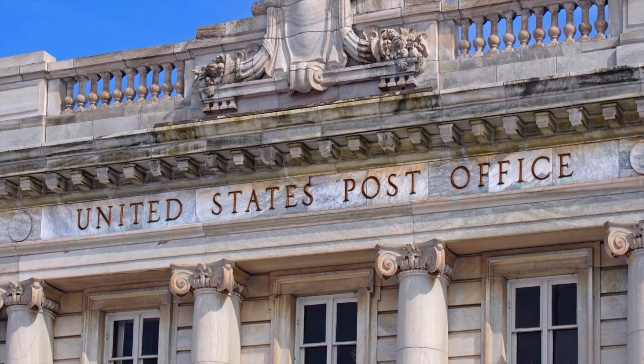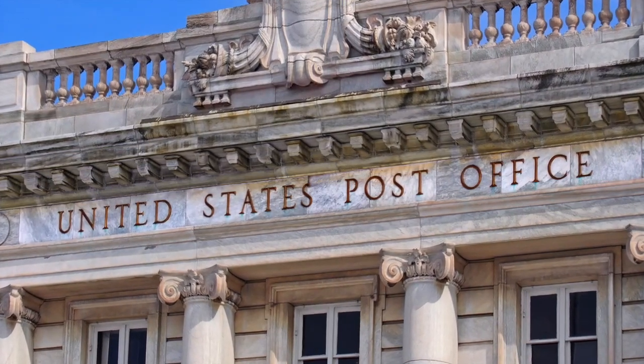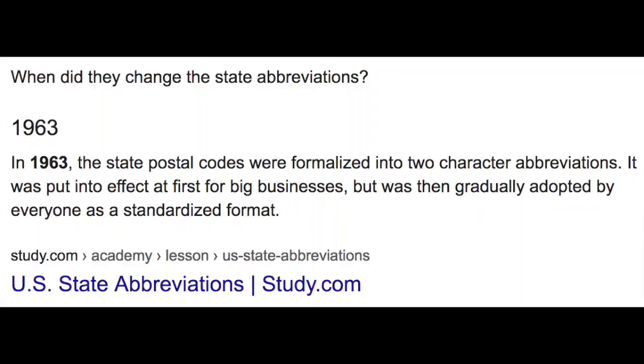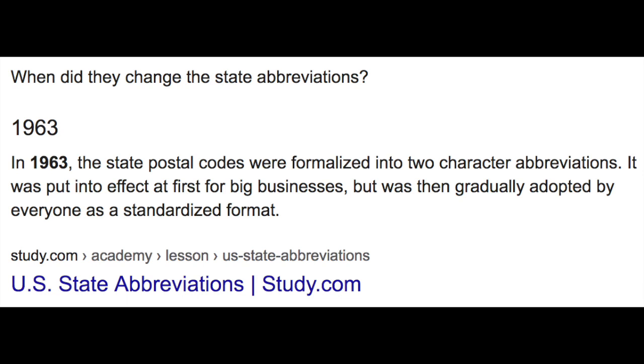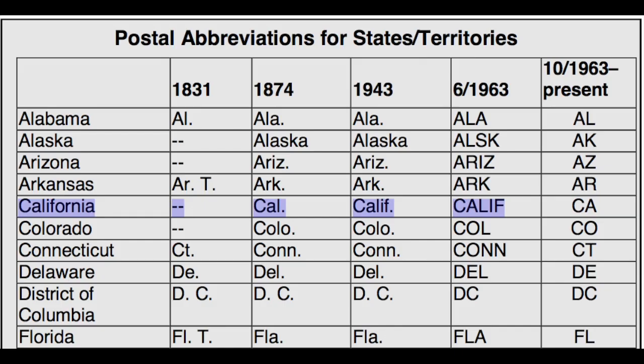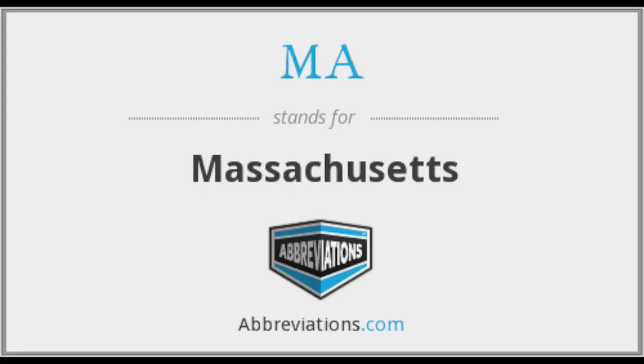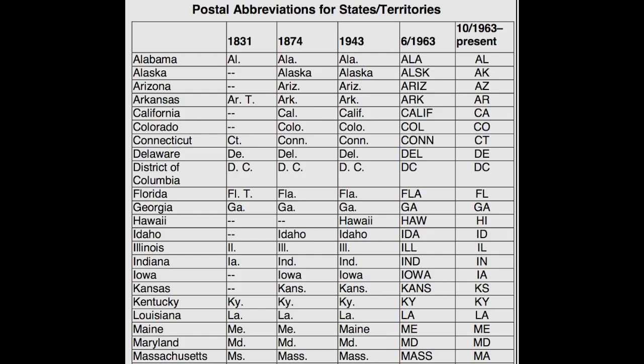Just like the United States Post Office has systems for naming states including two letter abbreviations, they will change the system if it suits them. At one time the state abbreviation for Massachusetts was MASS and for California it was CALIF. Now it's reduced to just CA or MA, and they can do this with anything. They can do this with taxonomy.